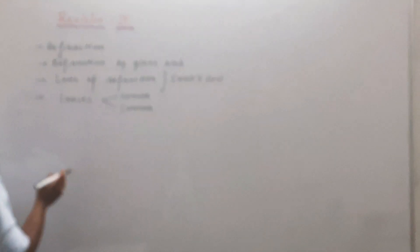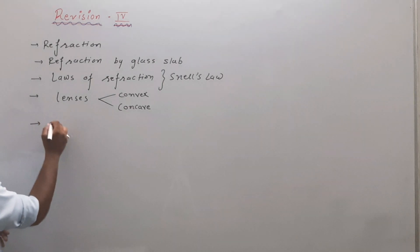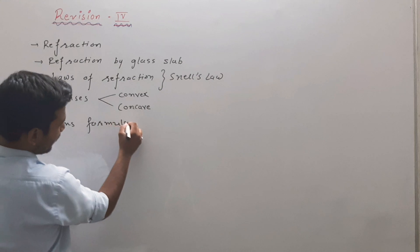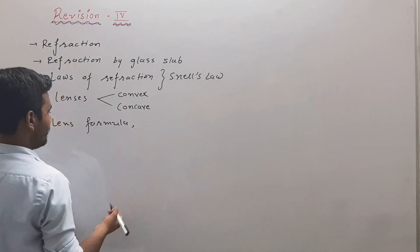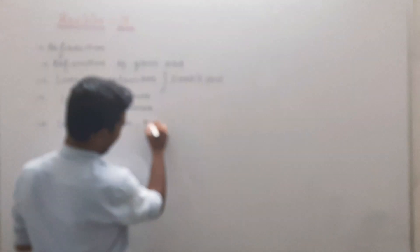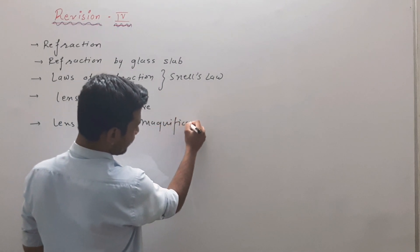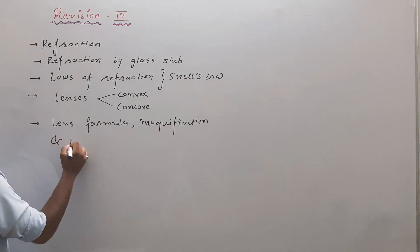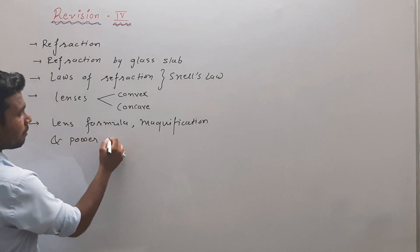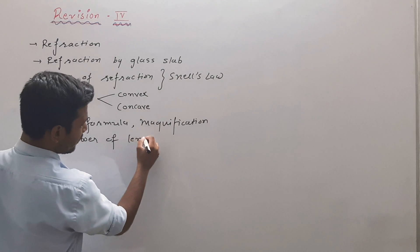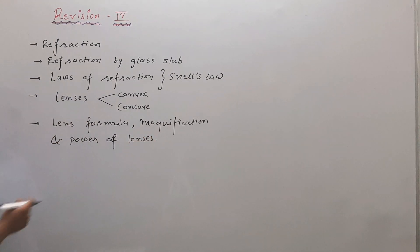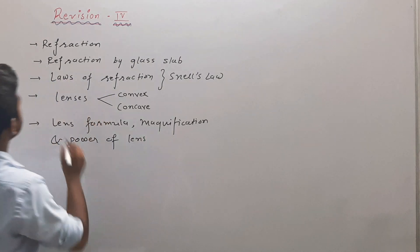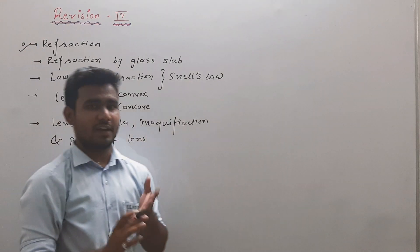That means Diverging and Converging, both types of lens. After that we will discuss the Lens formula, Magnification, and Sign convention — which is also similar to mirror — and Power of lenses. So let us start first from the definition of Refraction.